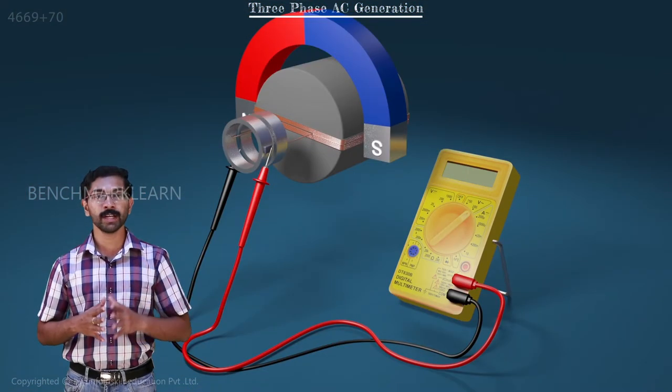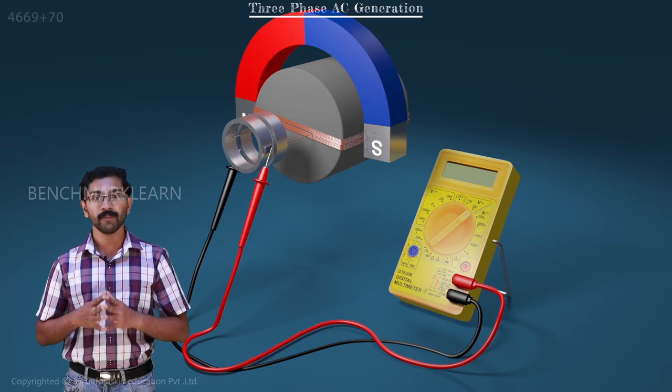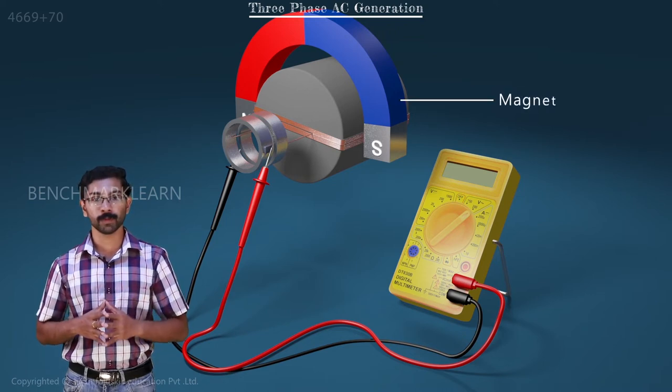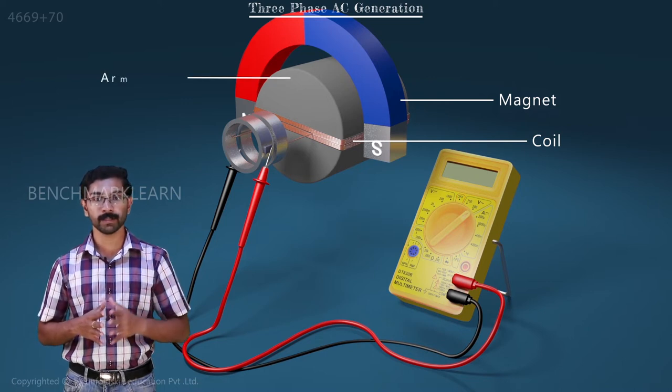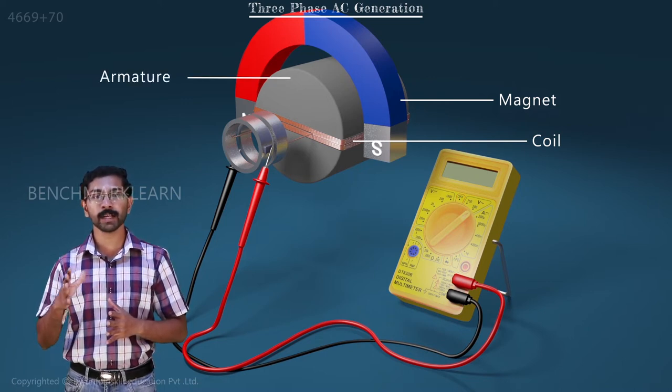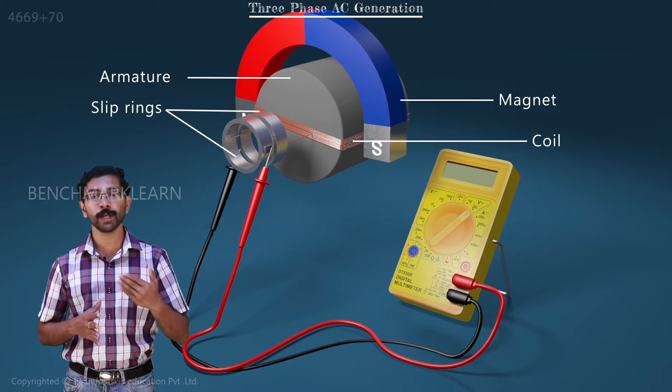Consider a basic alternator scheme like this. We have a pair of magnetic poles. A rectangular coil of wire wound around a cylindrical armature. The armature is connected to a shaft which is free to rotate.